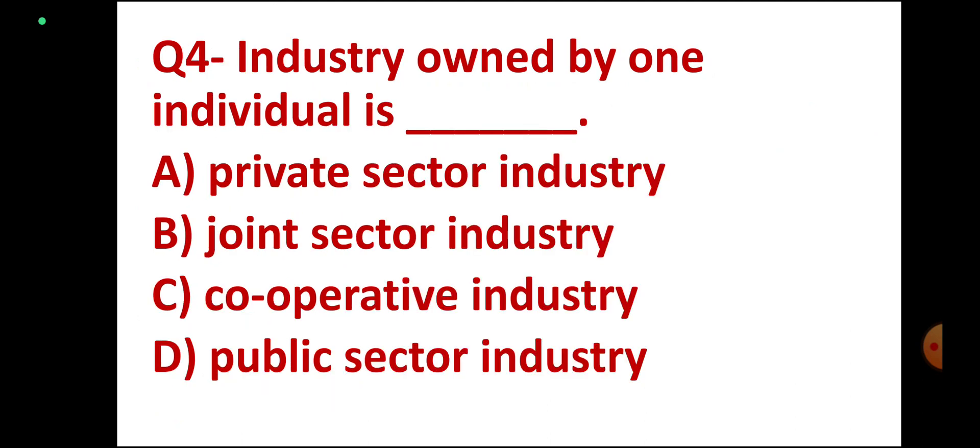Question number 4. Industry owned by one individual is DASH — Private sector industry, Joint sector industry, Cooperative industry, Public sector industry. Correct answer: Private sector industry. Option A. Correct.